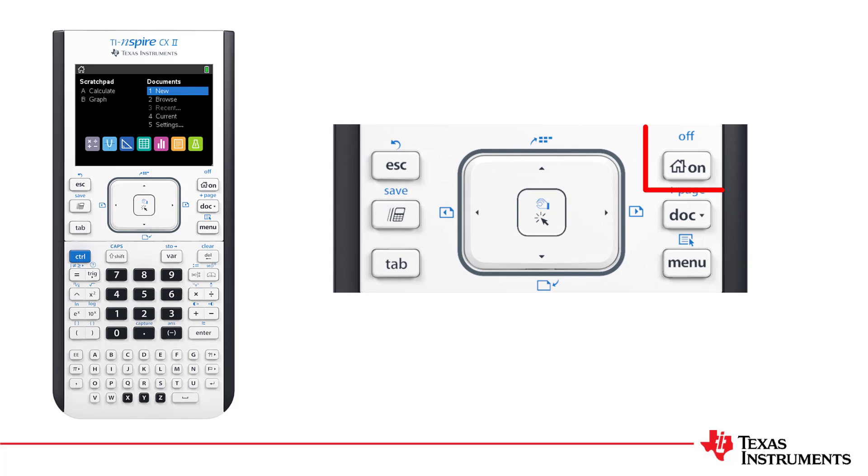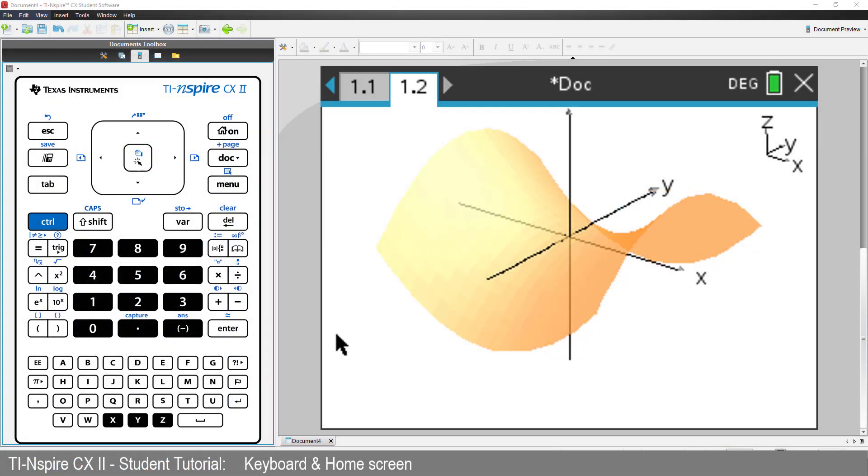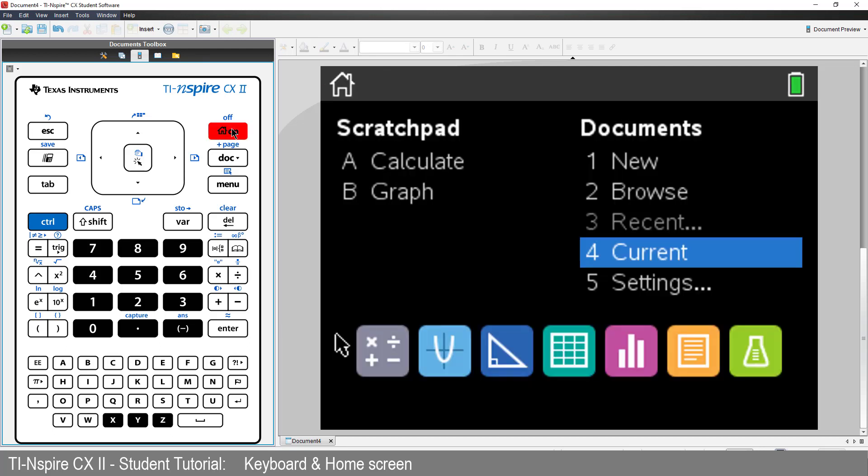Let's start with the home key. It's also the on and off key for your calculator. If you press the home key, you'll return to the home screen. Much the same as the home button on an Android phone or swiping up on an iPhone or pressing Windows and D on a computer.